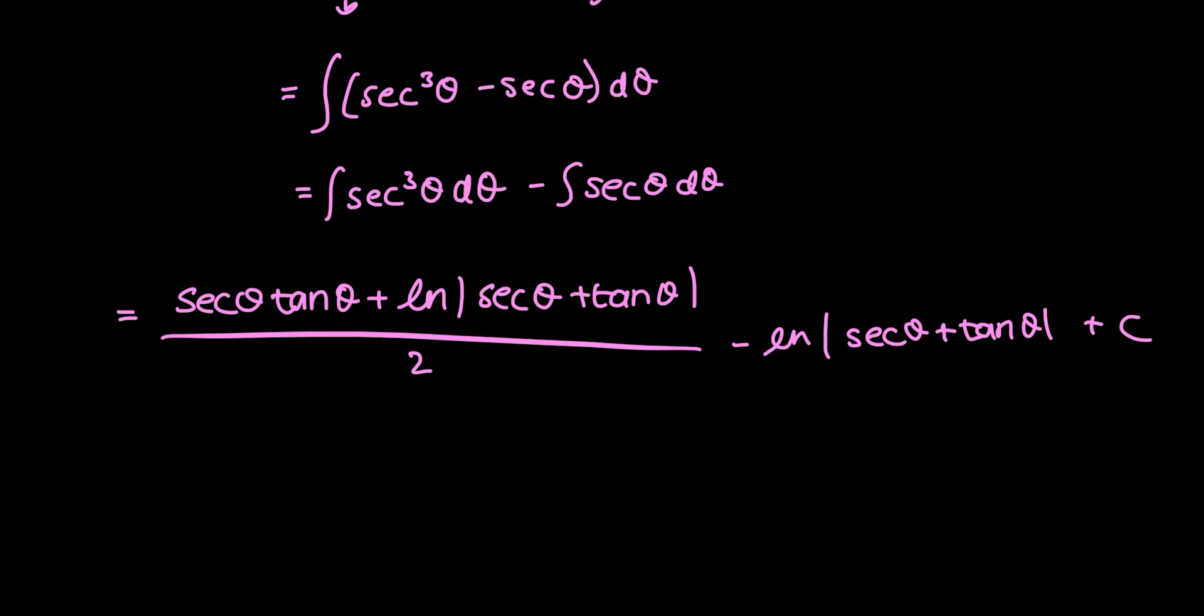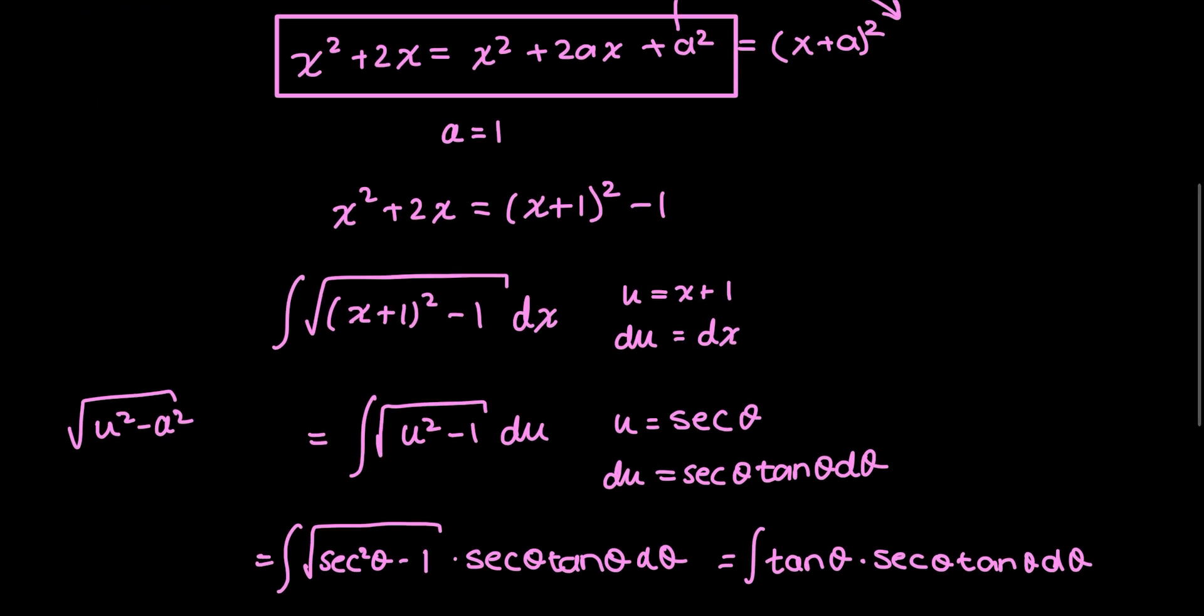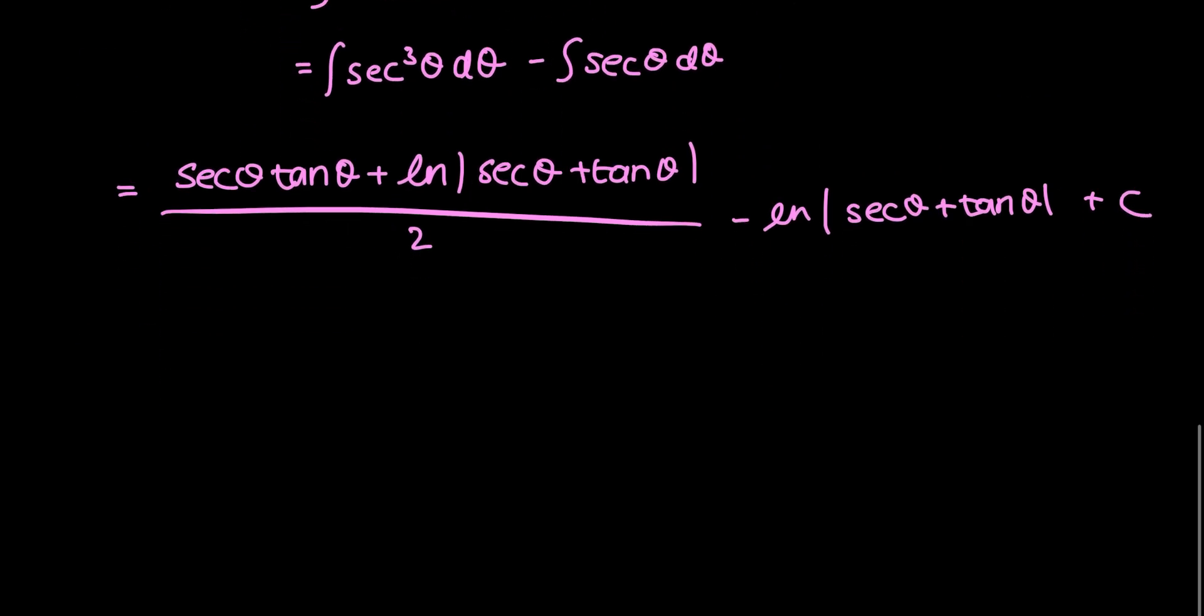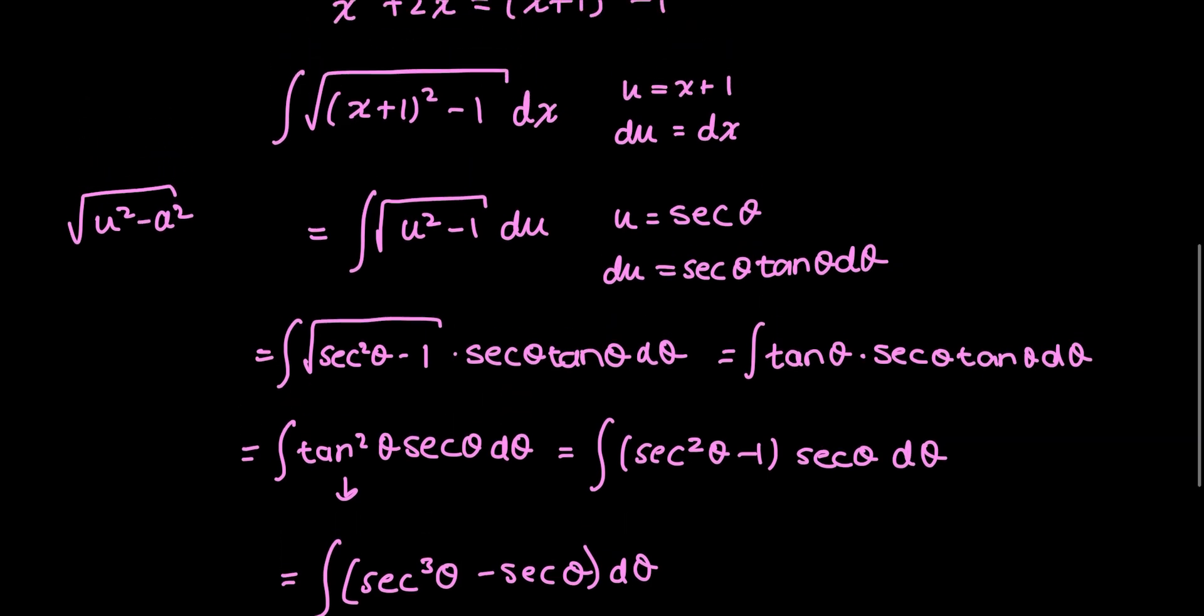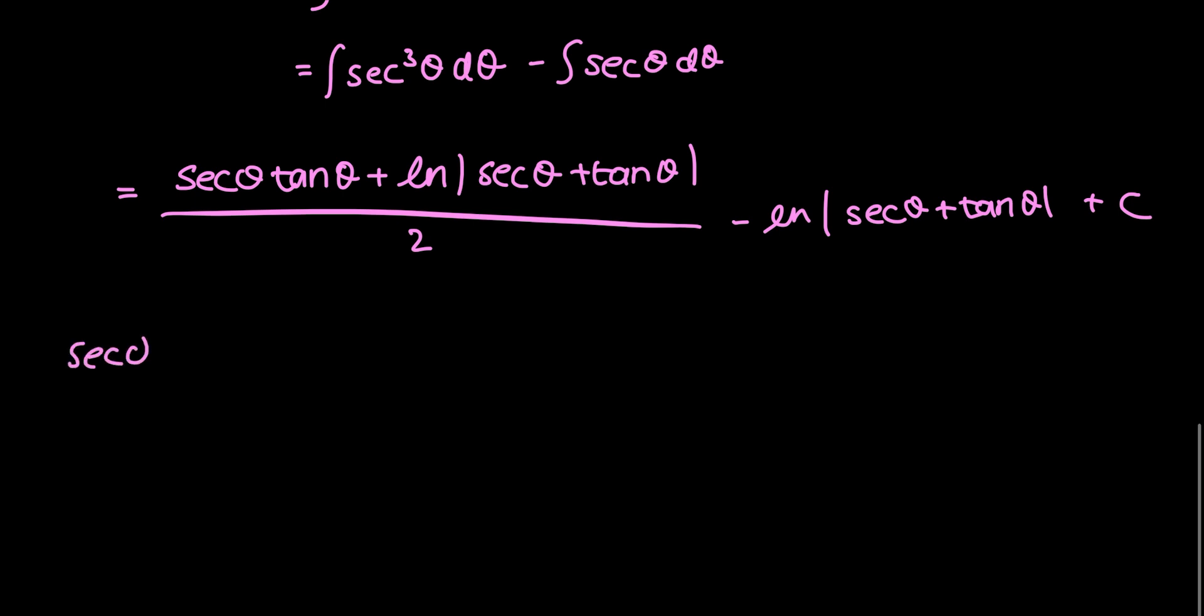And I'm not done yet, unfortunately. I'm done with the integration, but like I said earlier, the algebra here is a little bit of a pain. I started with the variable x, and then I had a u, and then I had a theta. So, I need to go back and write everything in terms of x. So, I defined u as secant theta earlier, and before that I defined u as x plus 1. So, secant theta is equal to x plus 1.